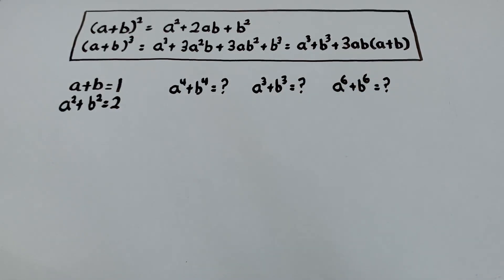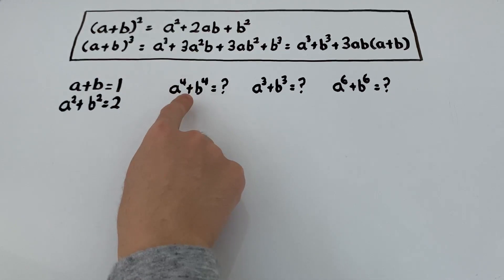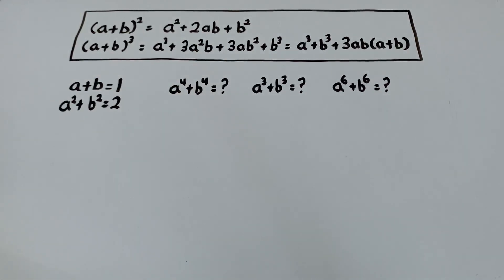And in this video, we're going to go over a to the 4th plus b to the 4th. But before we get into that, we have two identities up here that are very important because they're going to help a lot.